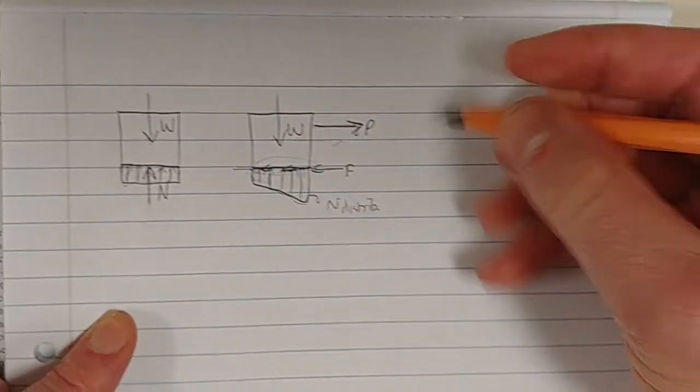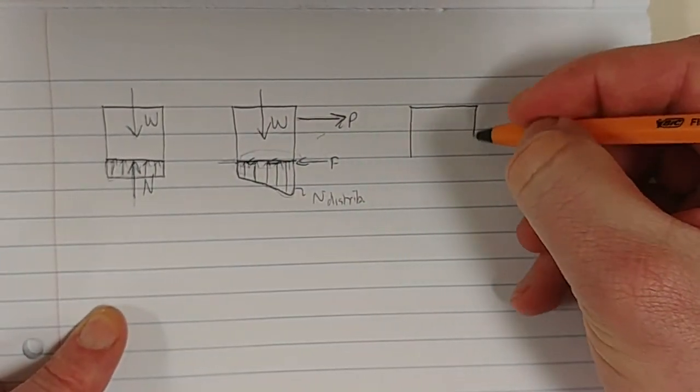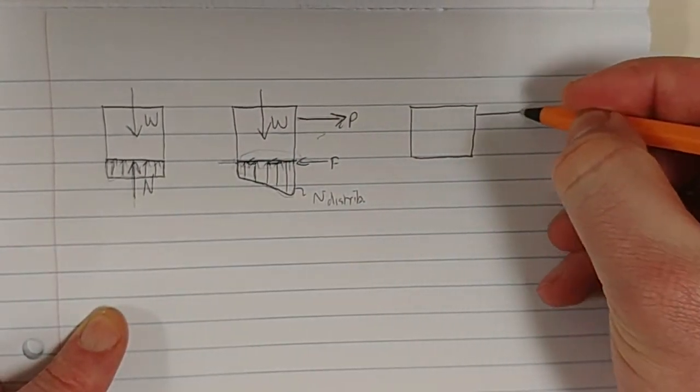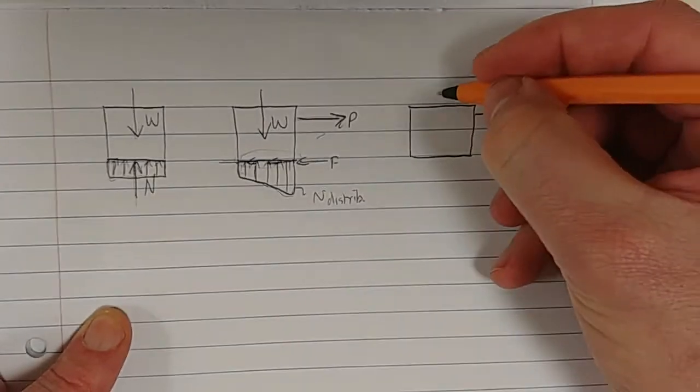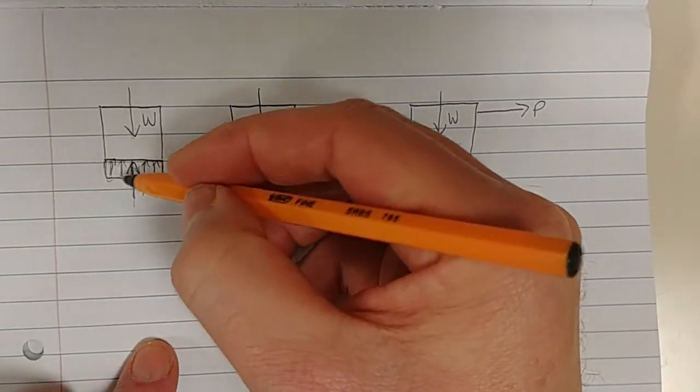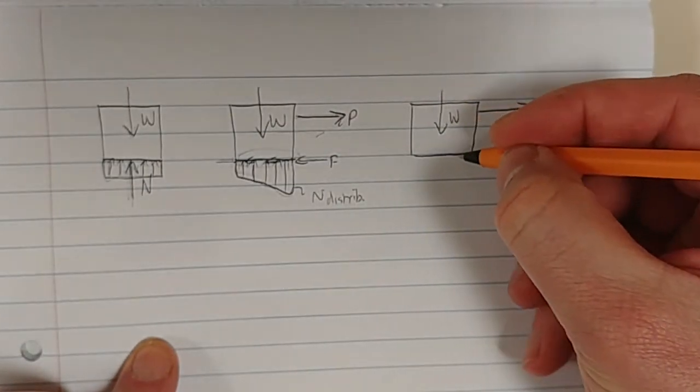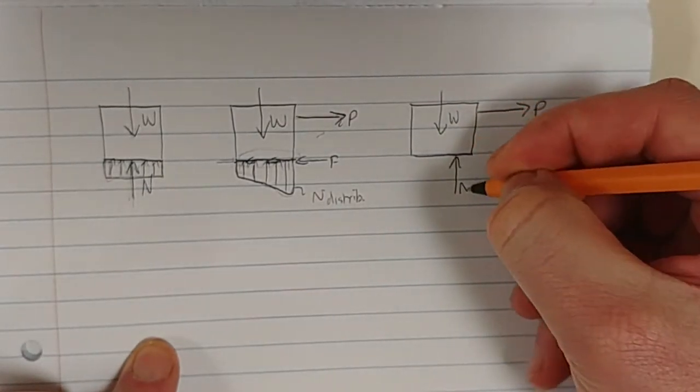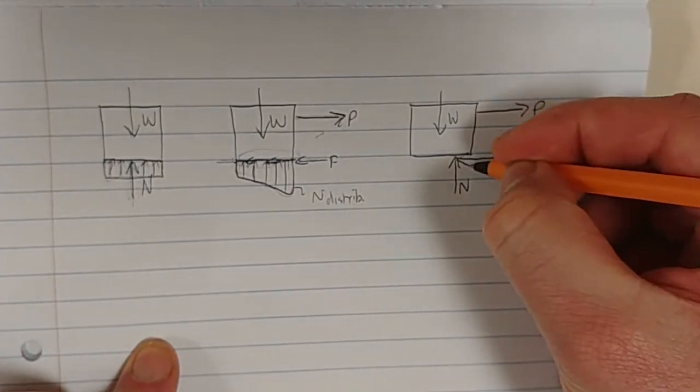Let's just draw it in weight. Ultimately, what you get is something like this. If we apply P to the side, weight will stay where it is, but the normal force that was in the middle there shifts to the side like that, and we have our friction force.